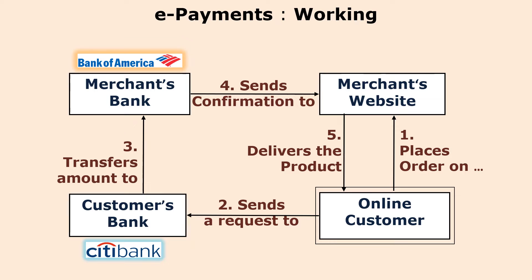For example purposes, here I am assuming the customer may be having an account in Citibank, and the merchant is having an account in Bank of America. So in total there are four entities: customer, customer's bank which is Citibank, merchant, and merchant's bank which is Bank of America.